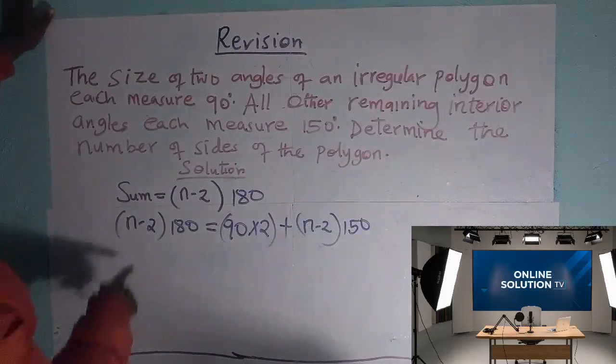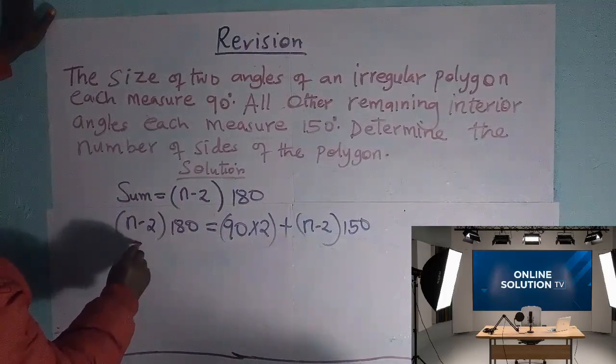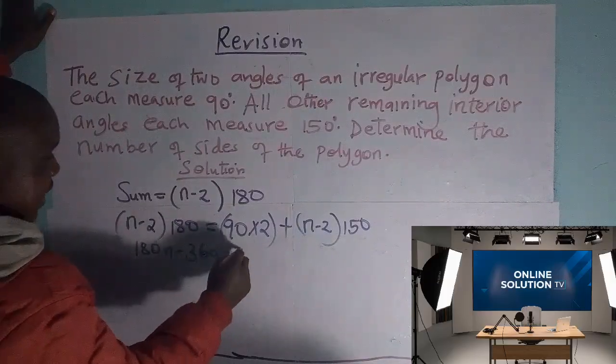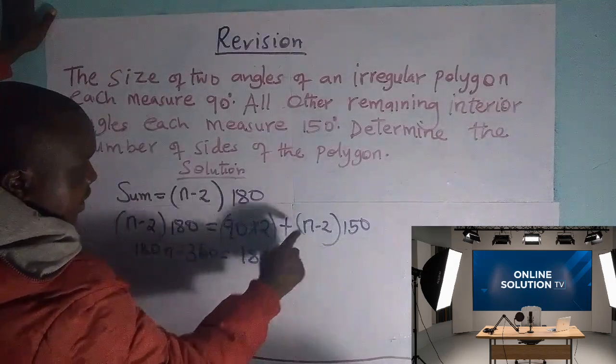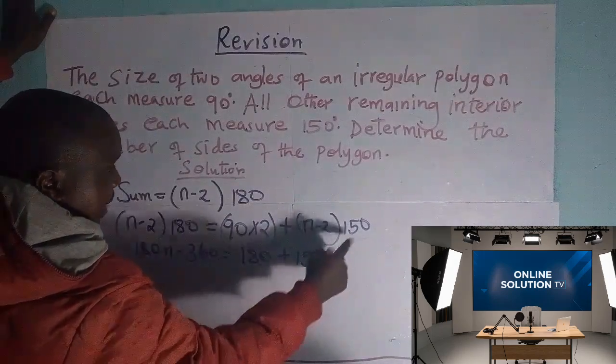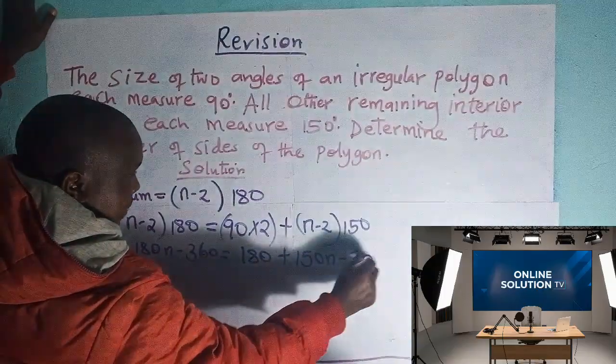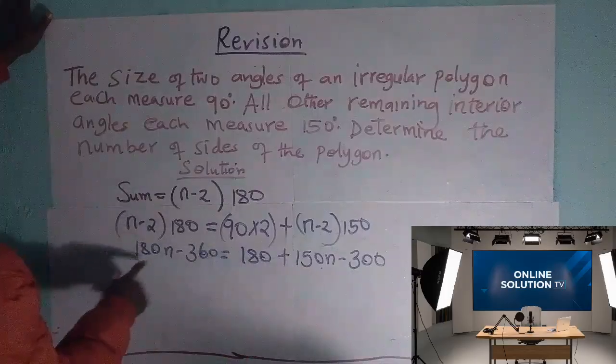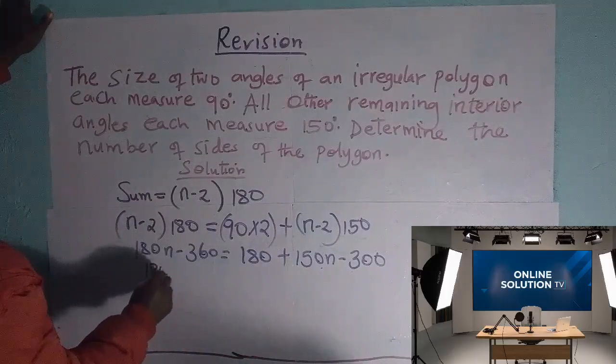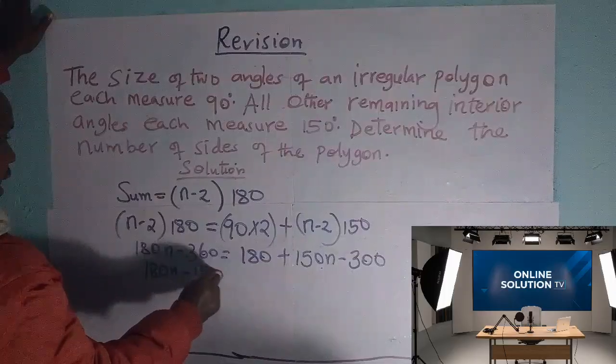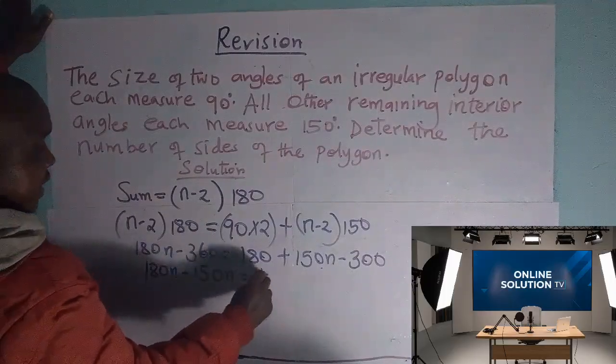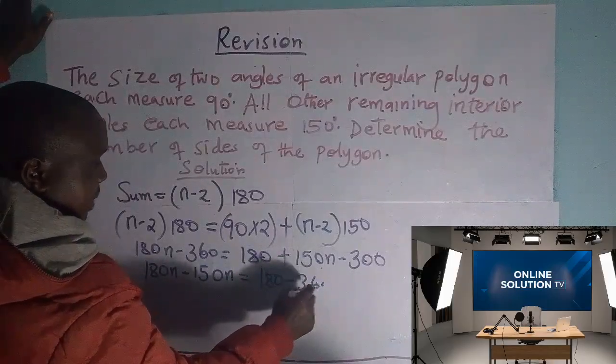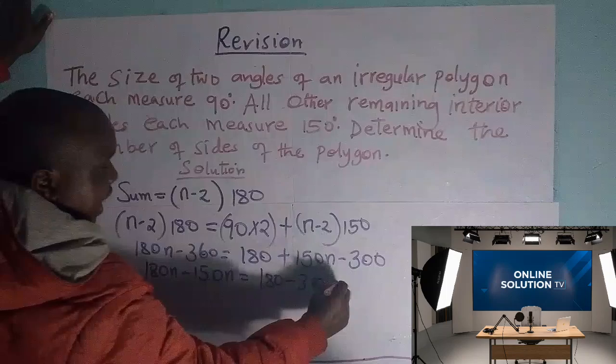Let's open this. This is 180n minus 360 will be equal to 180 plus 150n minus 300. Now, let's turn this side and become negative, that's 180n minus 150n is equal to 180 plus or minus 360, minus 300 this one, then this one will be addition 360.